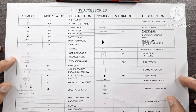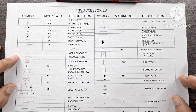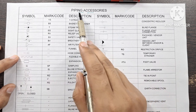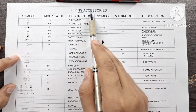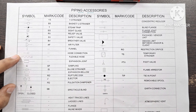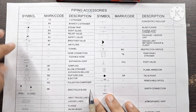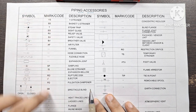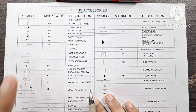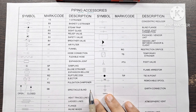Hello everyone. Welcome to the next video on how to read P&IDs. In this video, we are going to discuss piping accessories. You will see that we use so many piping accessories in our pipeline, and in the P&ID you will see the symbols and codes used. The description of those symbols can be seen simply from the P&ID legend sheets.